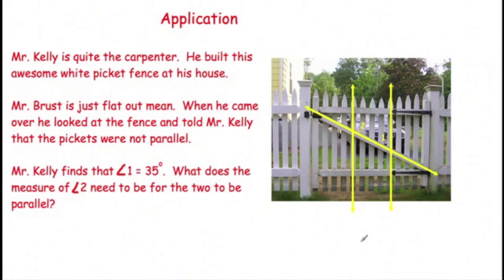All right, a little application. Mr. Kelly built this fence. Brous comes out. He's really mean. He looks at me and says, those are not parallel. Kelly measures and finds that this angle here is 35 degrees. What should angle 2 be?